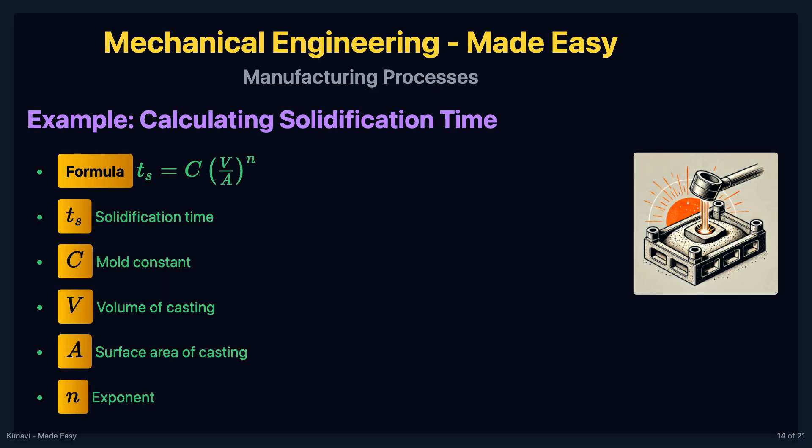The solidification time in casting can be estimated using Shvorinov's rule, which is given by the formula: t sub s equals c times the volume of the casting divided by the surface area of the casting, raised to the power of n.